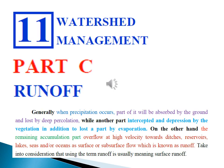Generally, when precipitation occurs, part of it will be absorbed by the ground and lost by deep percolation, while another part is intercepted and depressed by the vegetation in addition to a part lost by evaporation. On the other hand, the remaining accumulation part overflows at high velocity toward ditches, lakes, seas, and or oceans as surface or subsurface flow which is known as runoff, taking into consideration that using the term runoff is usually meaning surface runoff.